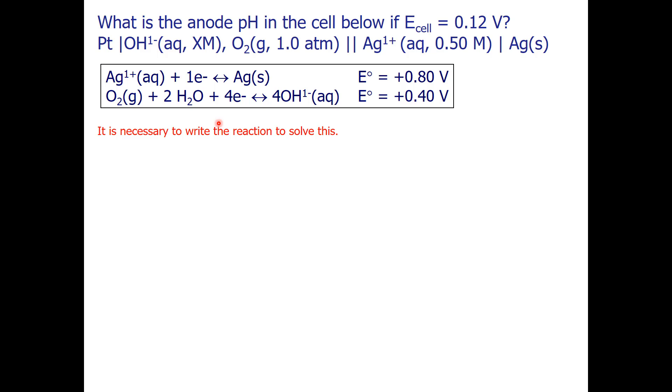In order to solve this, we need to write the reaction. Remember that our electrochemical cell has the format anode in the first compartment and cathode in the second compartment. So, my anode involves materials like oxygen and hydroxide.